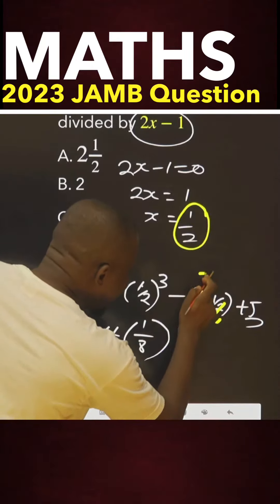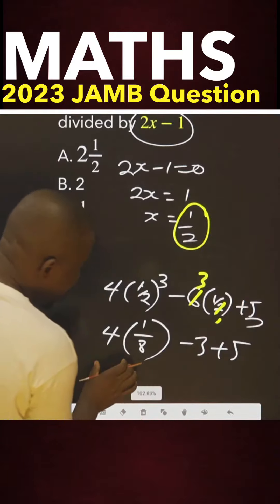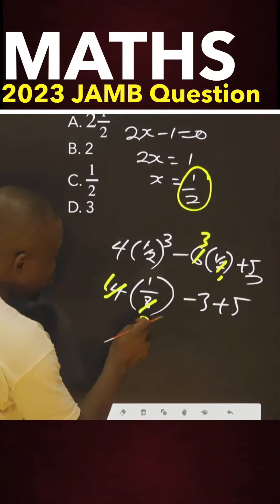That 2 here, 1, 2 here, 3. That is minus 3 plus 5. Okay, this here 1, this here 2, that is 1 over 2.